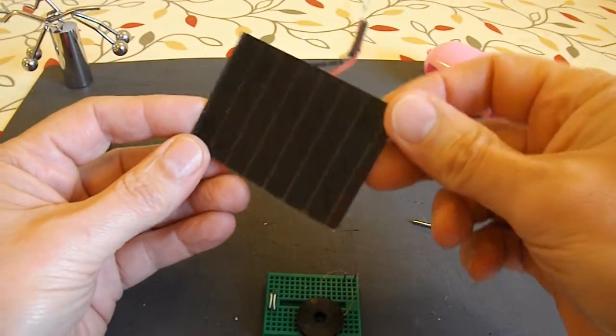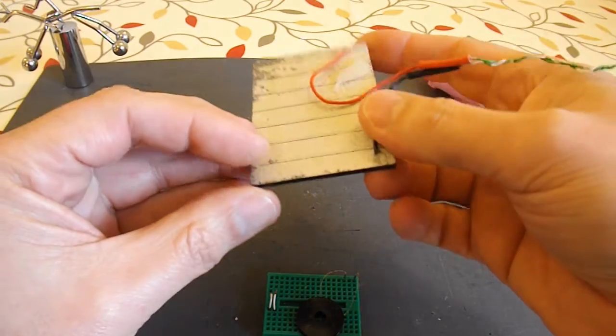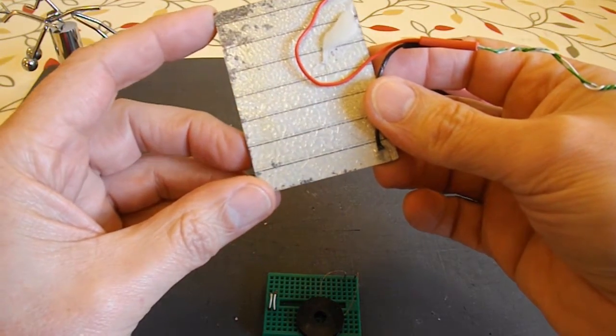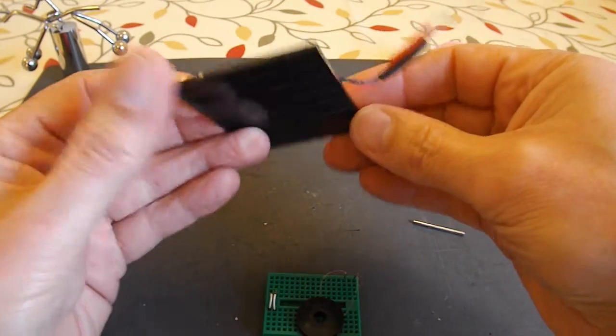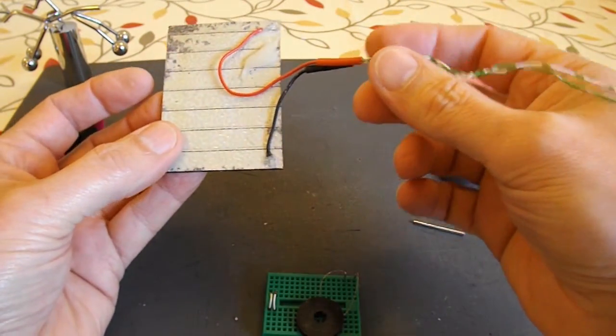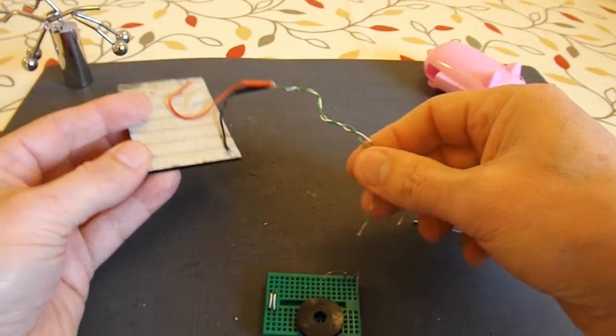Right, this solar panel is off a very old garden light. It's a glass one. I've extended the wires on it, so I can add them to my breadboard.